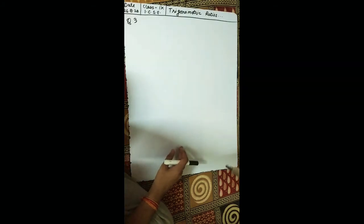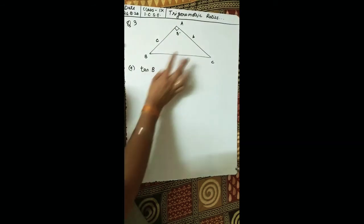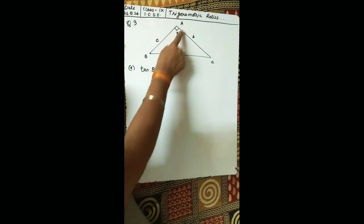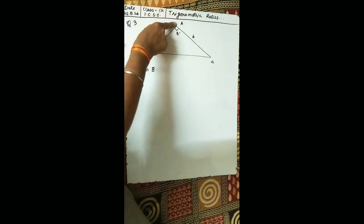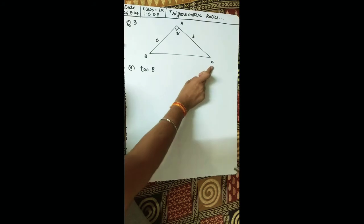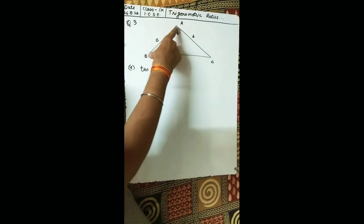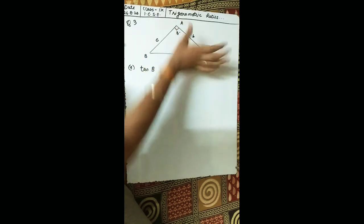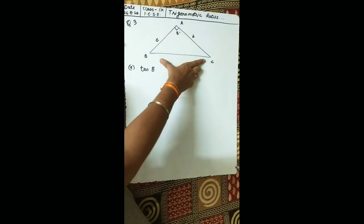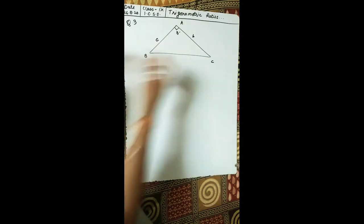The question asks us to find tan B. In the given figure, we have a right-angled triangle, right-angled at A, with vertices B and C. We are given the base and the perpendicular, but we don't have the hypotenuse — the longest side. So by the Pythagorean theorem, we first need to find the hypotenuse.